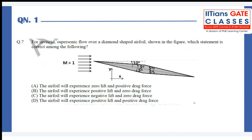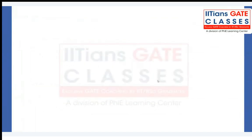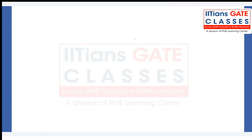Since only the angles are given and Mach number is not given, it is not easy to quantify, but qualitatively we can approach this problem. First, I will analyze what happens on the upper side of the aerofoil — this section, this section, and this section. Then we will see what happens on the downstream, that is the downside of the aerofoil. So I have drawn an aerofoil.